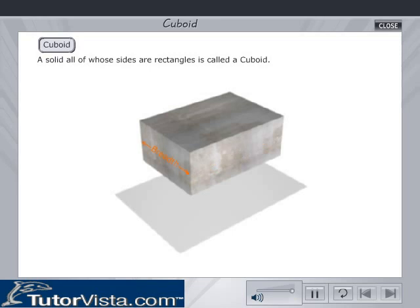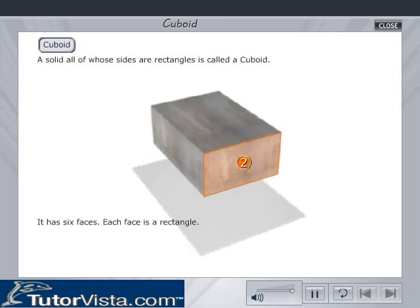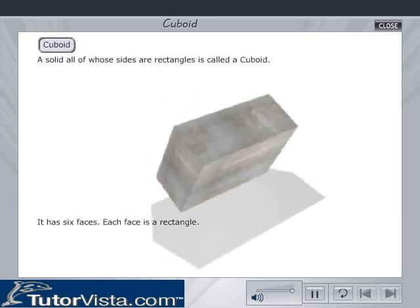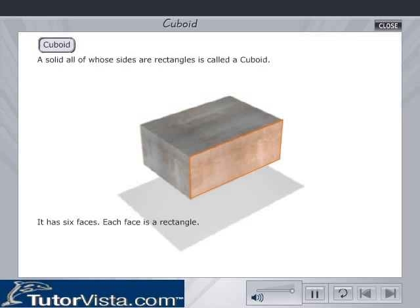A three-dimensional view of a cuboid is shown. It has six faces; each face is a rectangle.